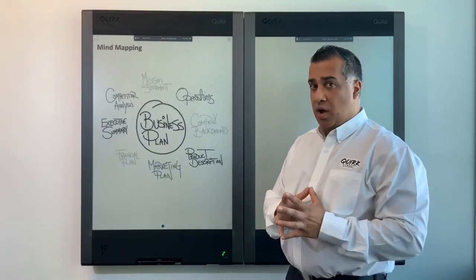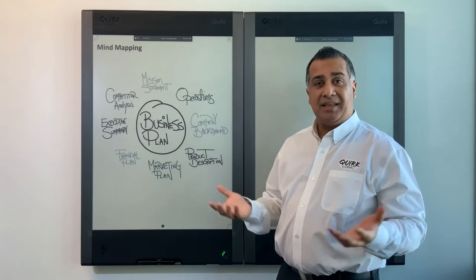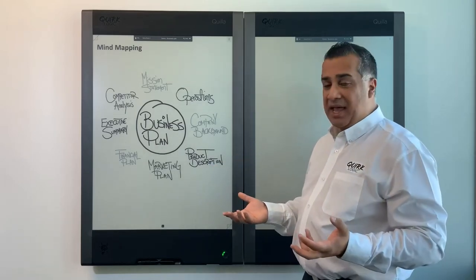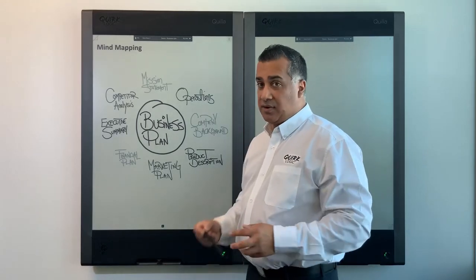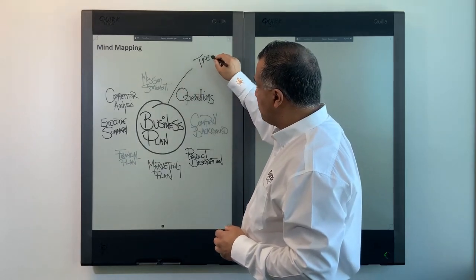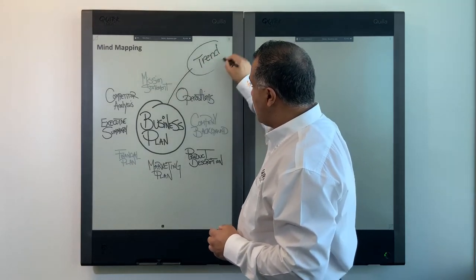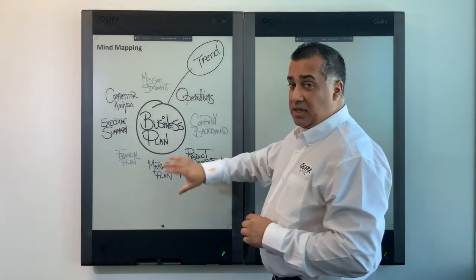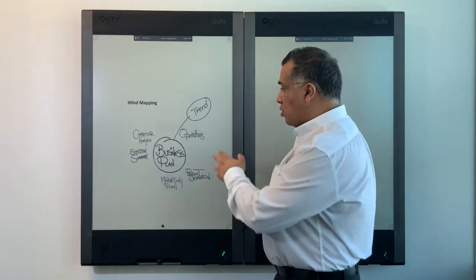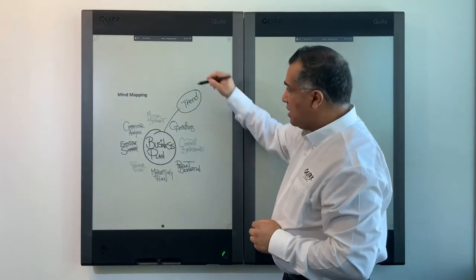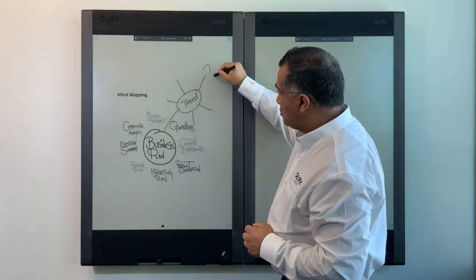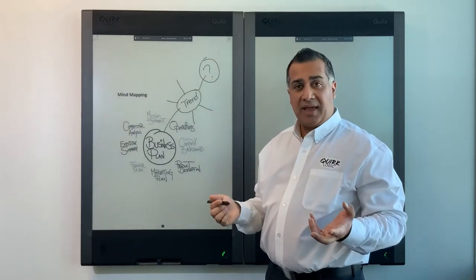Another feature on the Quilla is the unlimited surface writing area. Here I'm doing a brainstorming session on a business plan and I want to include trend analysis. As I grab my pen and make a new topic, I run out of space — but I can pinch the screen to create more space, giving my team room to keep brainstorming on that topic.